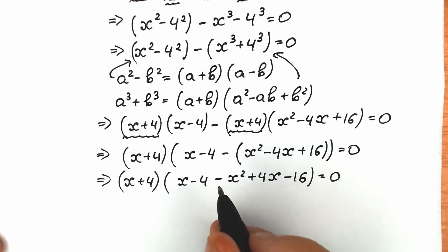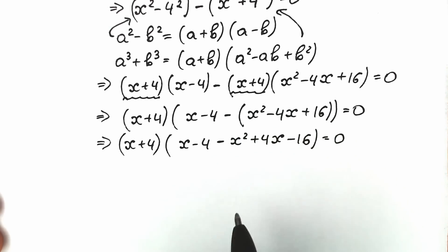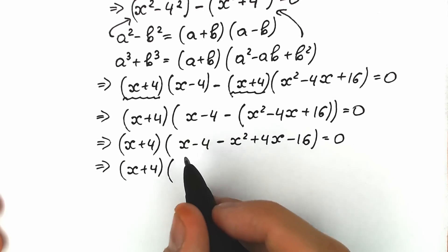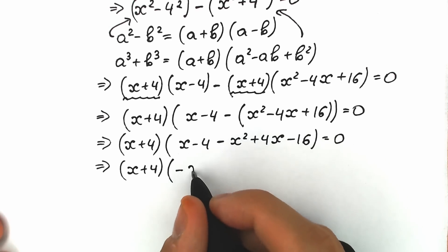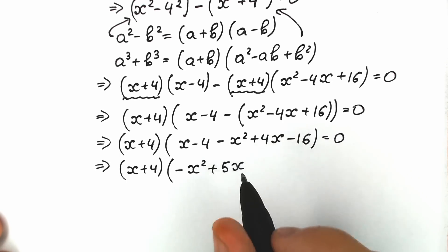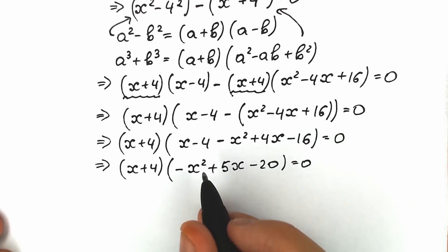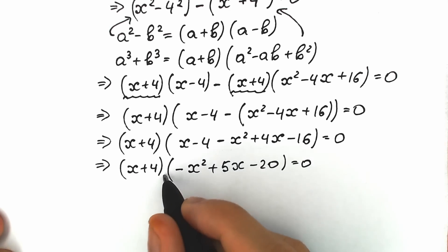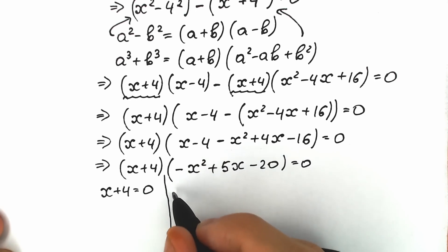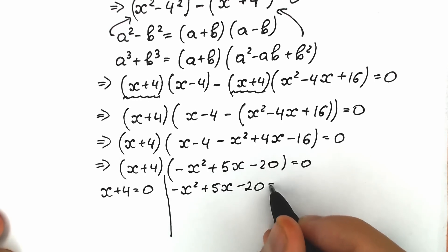This is a very tricky moment — one wrong sign and the result is incorrect, so we go step by step. Inside the parenthesis we combine like terms: minus x squared, then x plus 4x gives plus 5x, and minus 4 minus 16 gives minus 20. So we have (x plus 4)(minus x squared plus 5x minus 20) equal to zero. A product equals zero when either factor equals zero: so x plus 4 equals zero, or minus x squared plus 5x minus 20 equals zero.